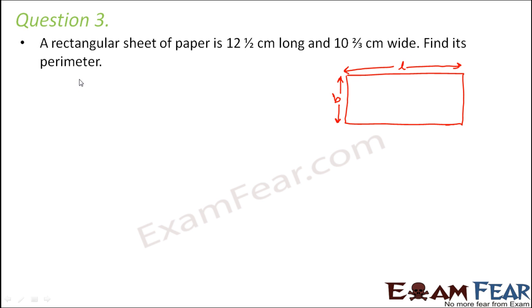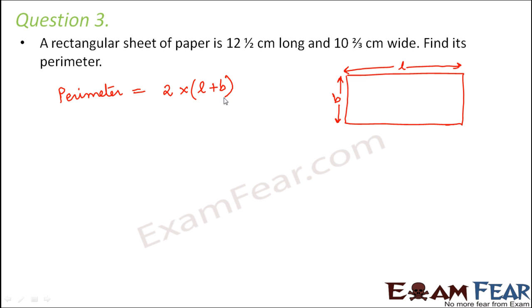Find its perimeter. Perimeter is nothing but the boundary. We can say that perimeter equals length plus breadth plus length plus breadth, which means the perimeter is equal to 2 times length plus breadth.